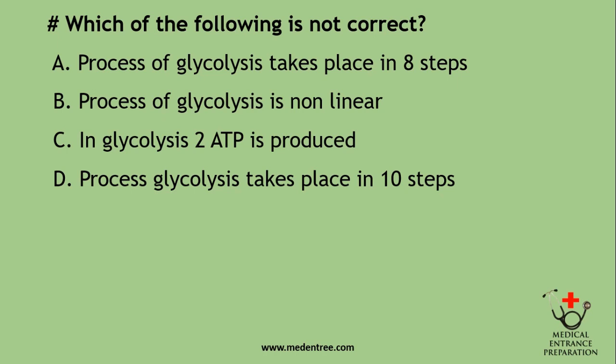Which of the following is not correct about glycolysis? Options: process of glycolysis takes place in 8 steps; process of glycolysis is non-linear; in glycolysis two ATP is produced; process of glycolysis takes place in 10 steps. The correct answer — meaning the wrong statement — is that glycolysis takes place in 8 steps. Glycolysis actually takes place in 10 steps, 2 ATP is produced, and it is non-linear.